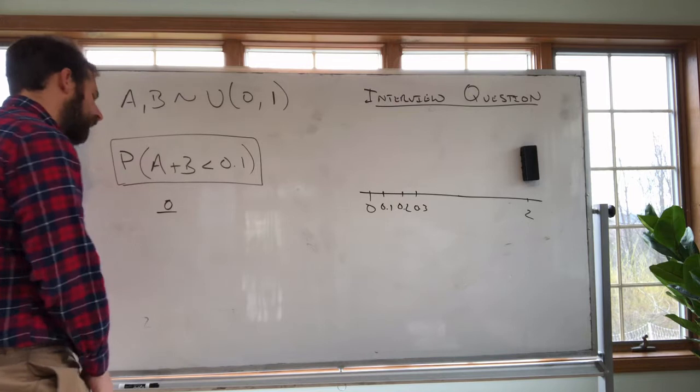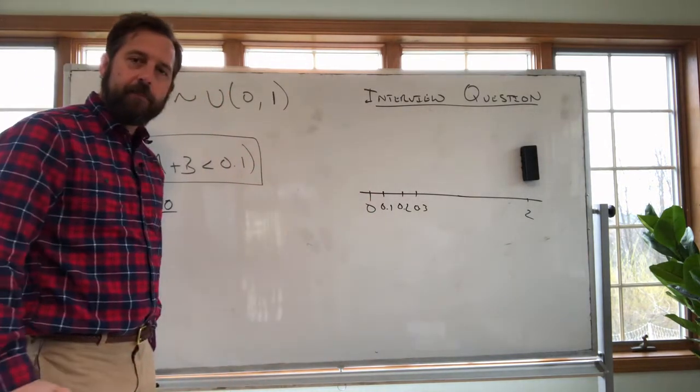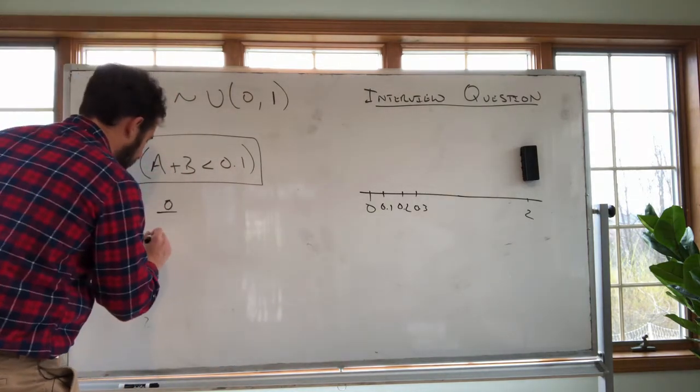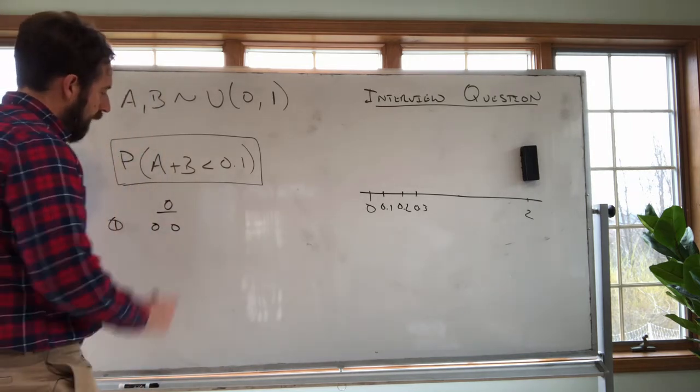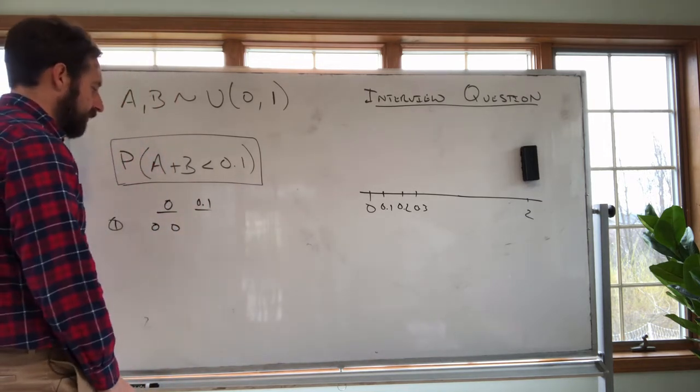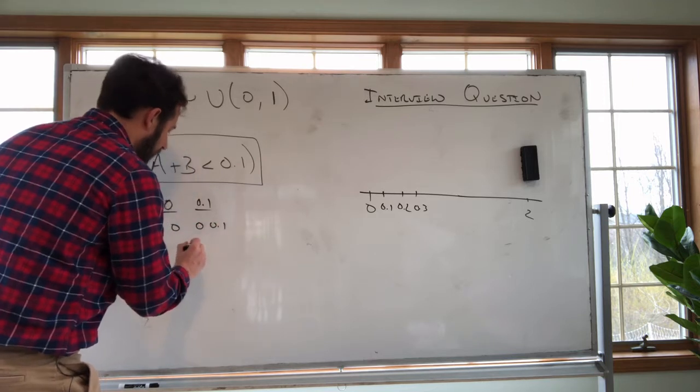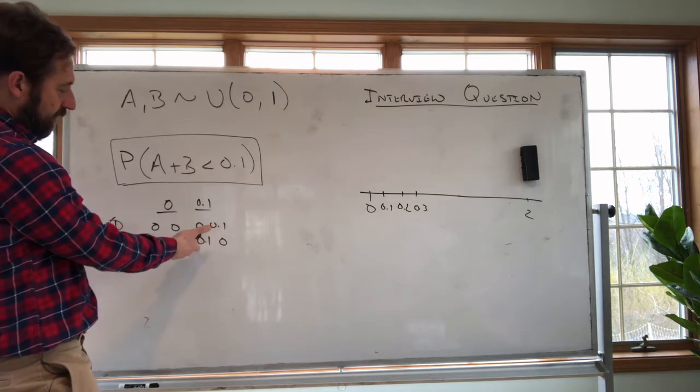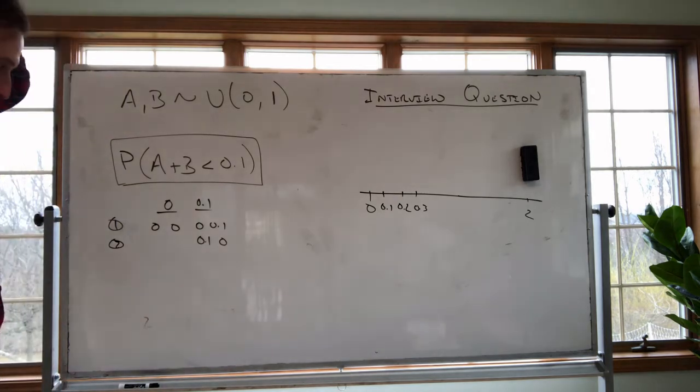So I can kind of look at this and say okay, well how many ways could I get a 0? Well I can only get 0 if both A and B are 0. So I can sit there and go okay, if A is 0 and B is 0, that's one way that I can get this. But if I go 0.1, how many different ways can I get this? Well if A is 0 and B is 0.1, if B is 0.1 and A, if A is 0.1 and B is 0. So there's two ways that I can get this, right?